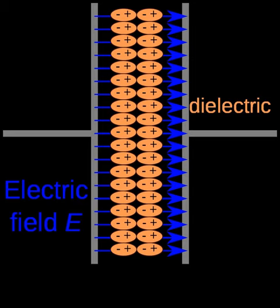A dielectric resonator oscillator is an electronic component that exhibits resonance of the polarization response for a narrow range of frequencies, generally in the microwave band. It consists of a puck of ceramic that has a large dielectric constant and a low dissipation factor. Such resonators are often used to provide a frequency reference in an oscillator circuit. An unshielded dielectric resonator can be used as a dielectric resonator antenna.